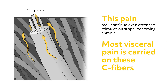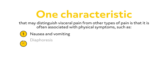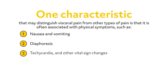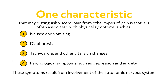Most visceral pain is carried on these C fibers. One characteristic that may distinguish visceral pain from other types of pain is that it is often associated with physical symptoms, such as nausea and vomiting, diaphoresis, tachycardia, and other vital sign changes, or psychological symptoms, such as depression and anxiety. These symptoms result from involvement of the autonomic nervous system.